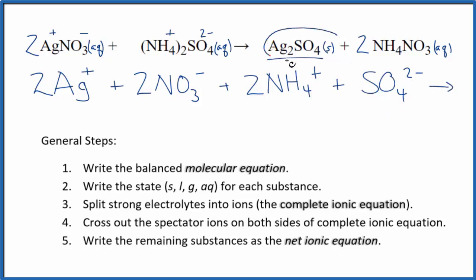For net ionic equations, we don't split solids apart. So we have this precipitate here. It's a solid. We don't split it apart. We just put Ag2SO4, keep it together. Then again,